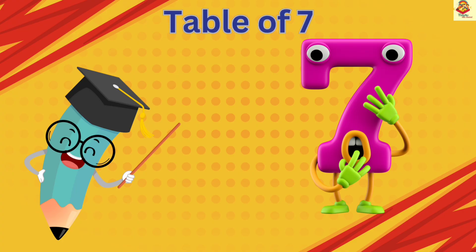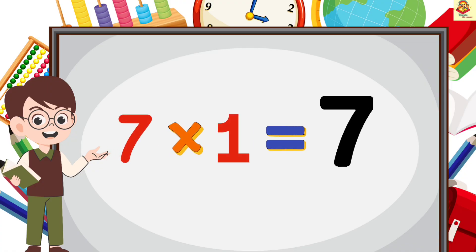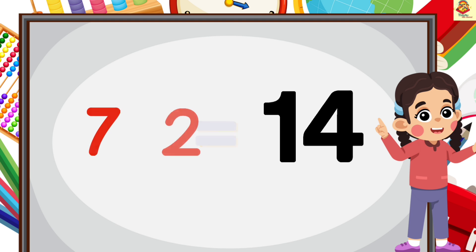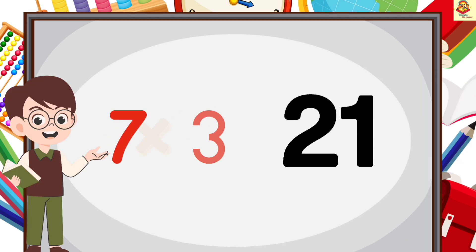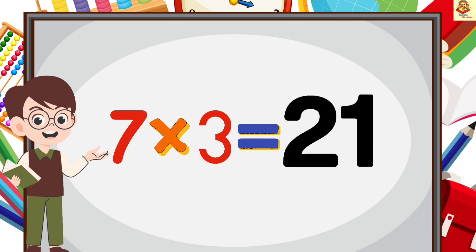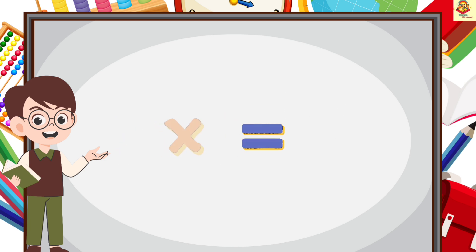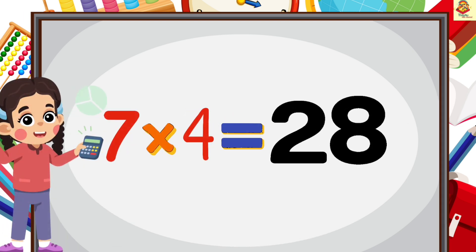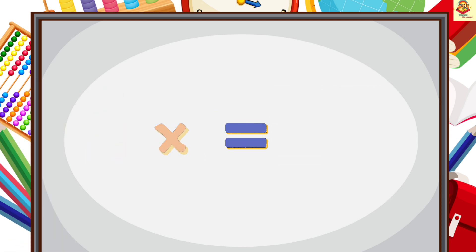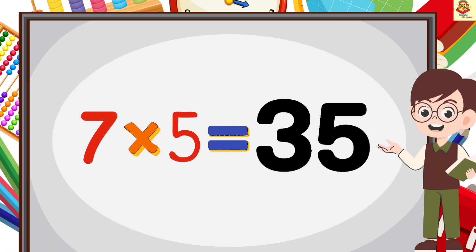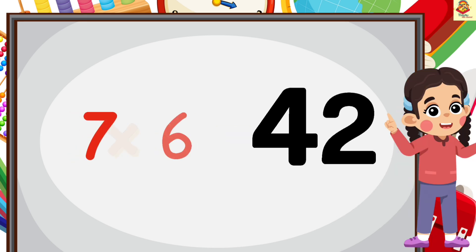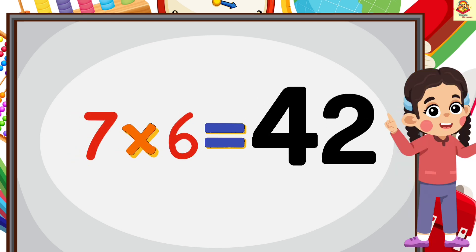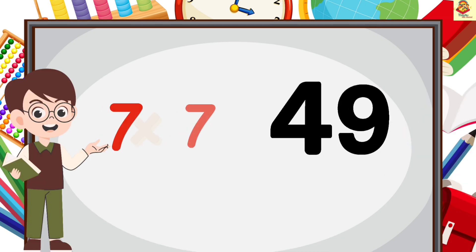Now table of 7. 7 1's are 7, 7 2's are 14, 7 3's are 21, 7 4's are 28, 7 5's are 35, 7 6's are 42.